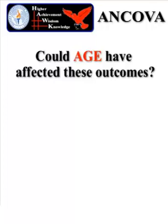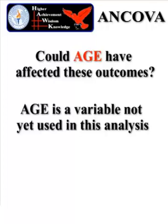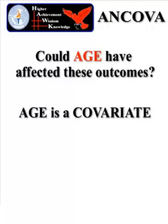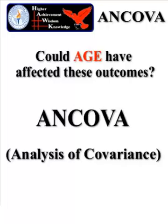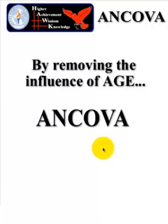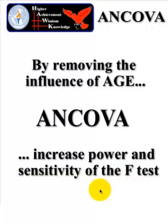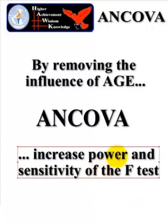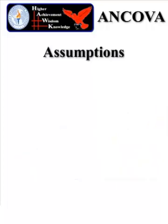So we are going to look at the age of these rats. Age is not yet a variable in this analysis — we did record the age of the rats, but we didn't use it yet. So we're going to label age as our covariate in the Analysis of Covariance. One of the things the ANCOVA can do for you is it makes your test stronger. By removing the influence of a variable that you believe could be affecting your outcome, you're going to increase the power and sensitivity of your test.